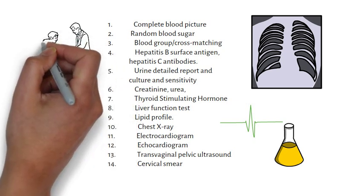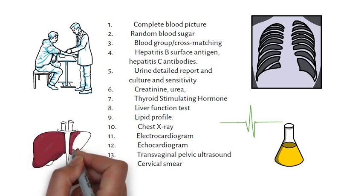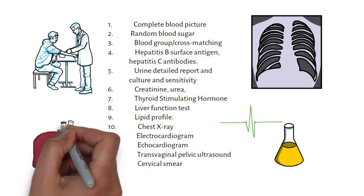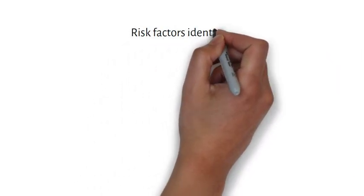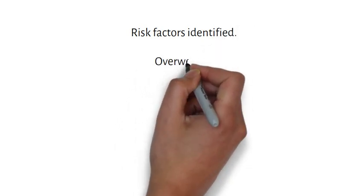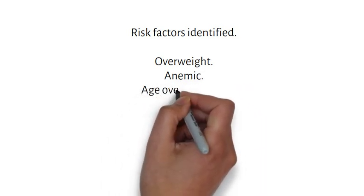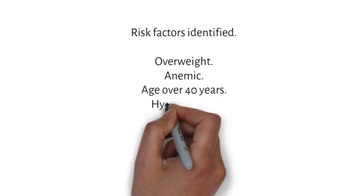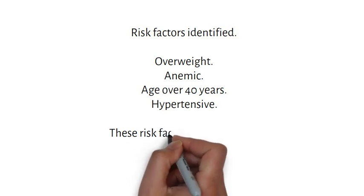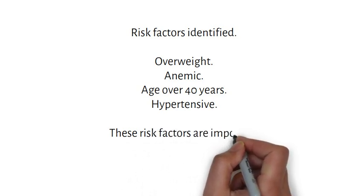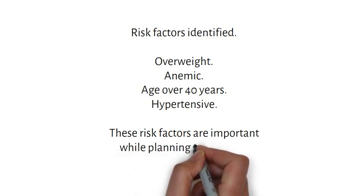A cervical smear should be done if she has never had one or if any past smear showed abnormality. After the initial assessment and investigations, the following risk factors are identified: number one, she is overweight; number two, she is anemic; number three, she is hypertensive; and number four, she is over 40 years of age. All these risk factors must be kept in mind while planning the surgery, performing the procedure, and in the post-operative period.